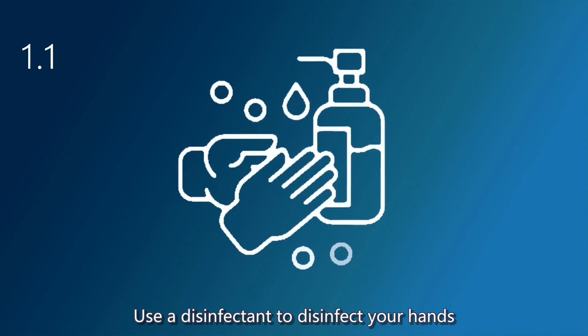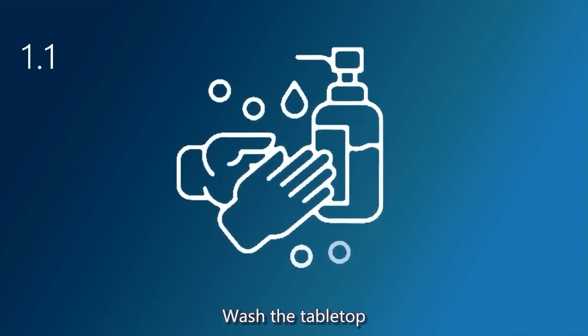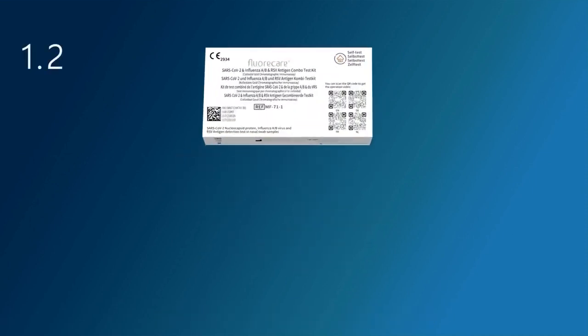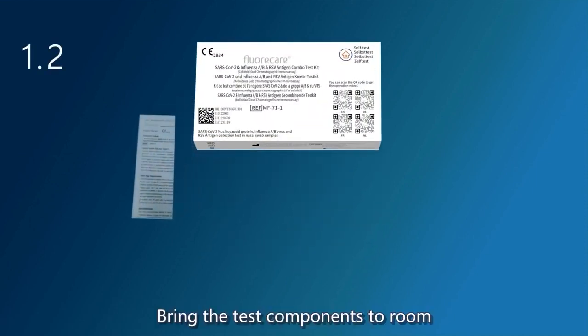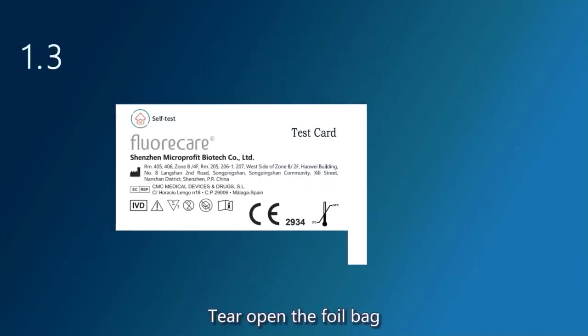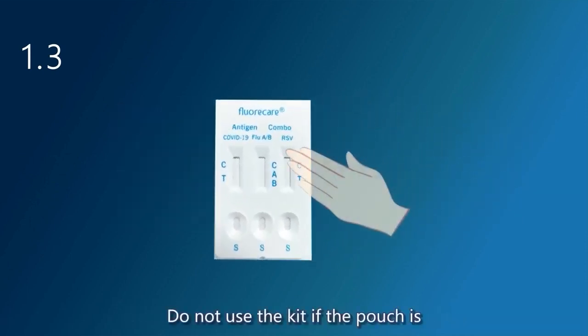Use a disinfectant to disinfect your hands after washing. Wash the tabletop on which the test will be performed. Bring the test components to room temperature, 20 to 25 degrees centigrade. Tear open the foil bag, take out the test card, and use it as soon as possible within one hour.